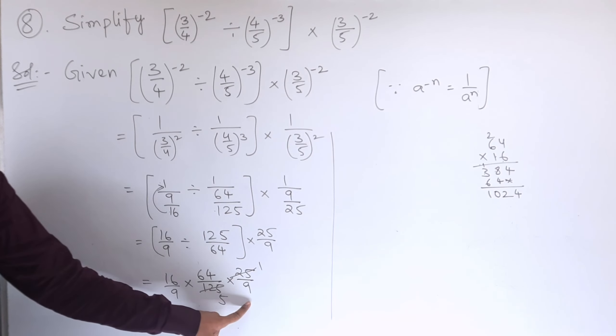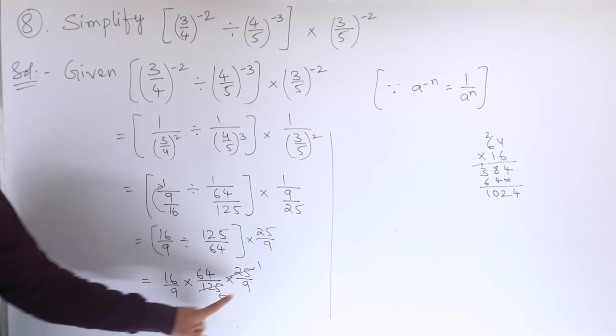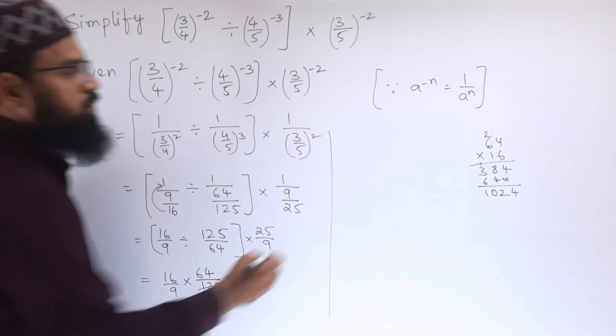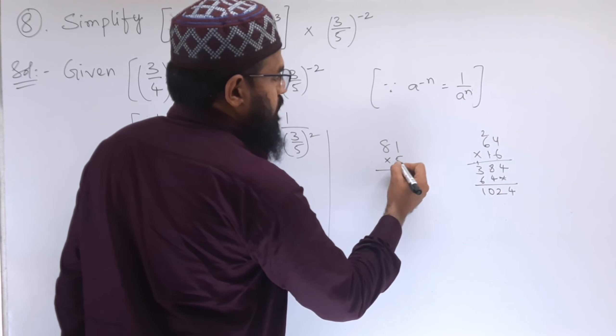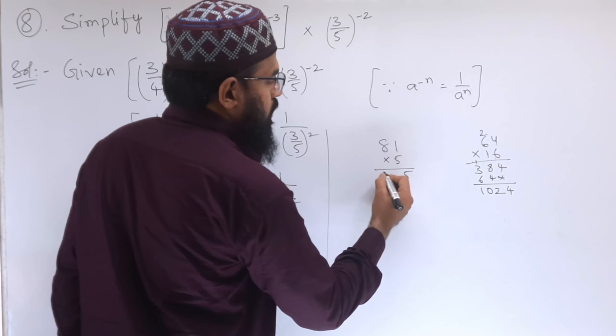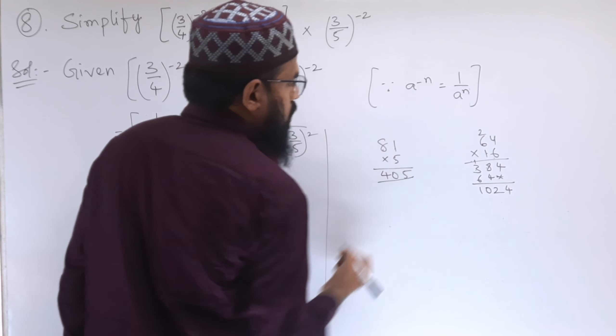Next, 9 times 9 is 81. 81 into 5, so 81 into 5, that is 5 times 1 is 5, 5 times 8 is 40, 4 not 5.